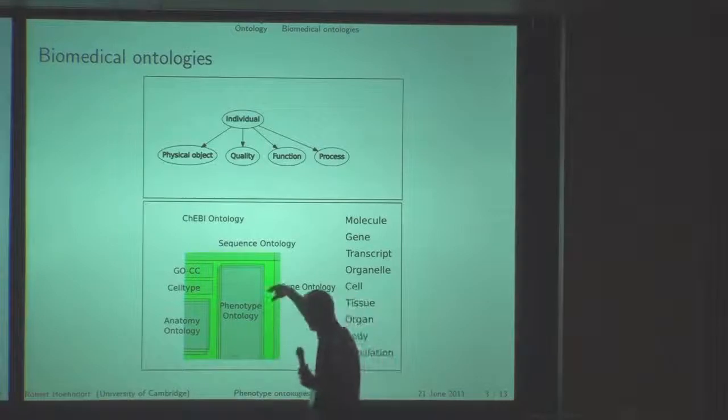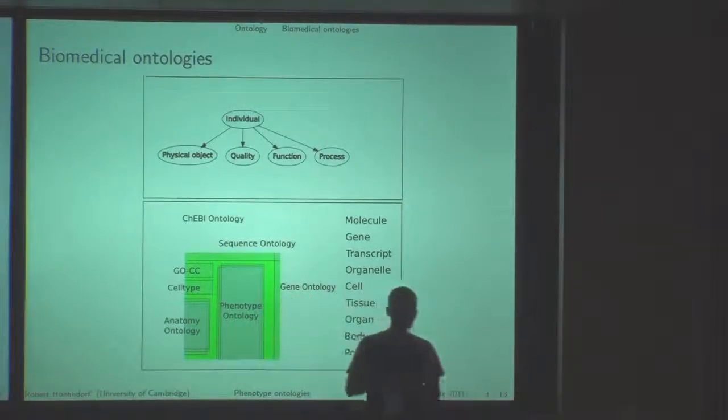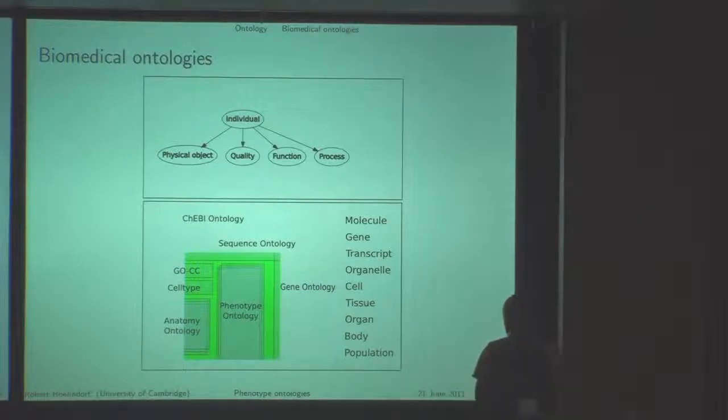The third dimension would be the species axis: the integration across different species. But merely using ontologies does not reduce heterogeneity, it just raises heterogeneity problems to a higher level.